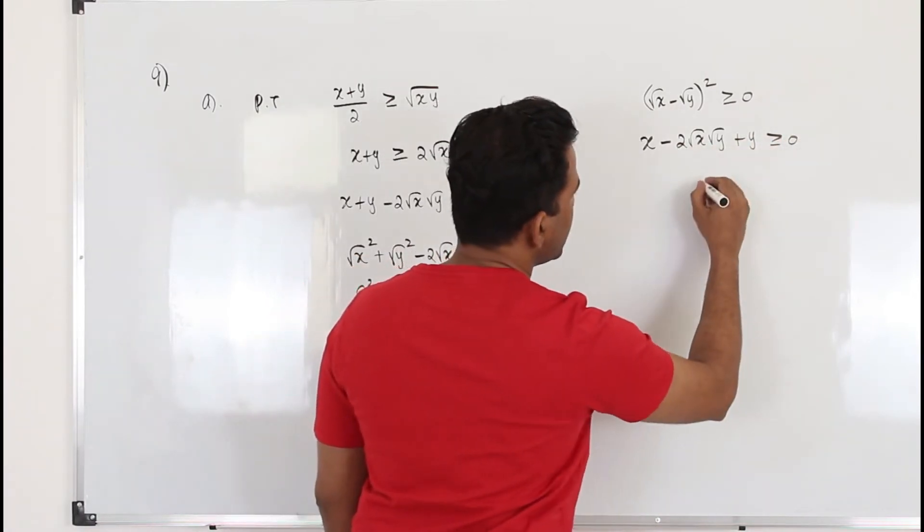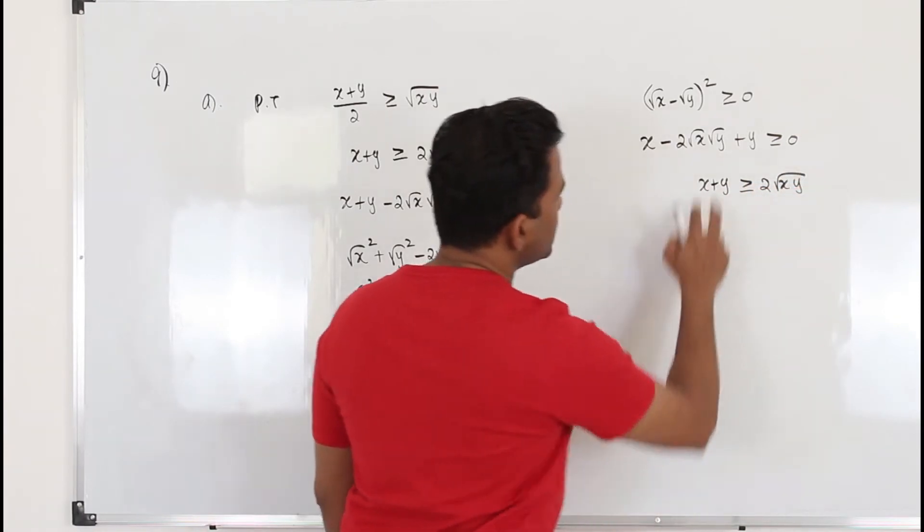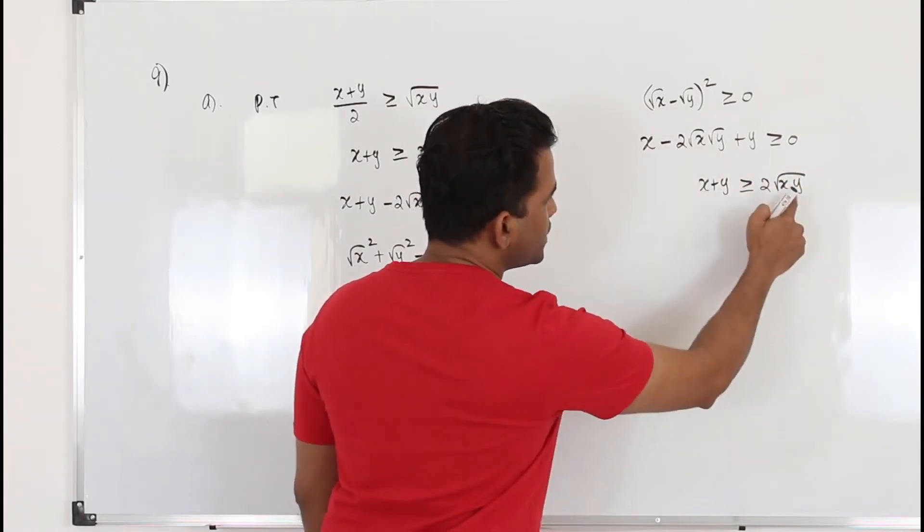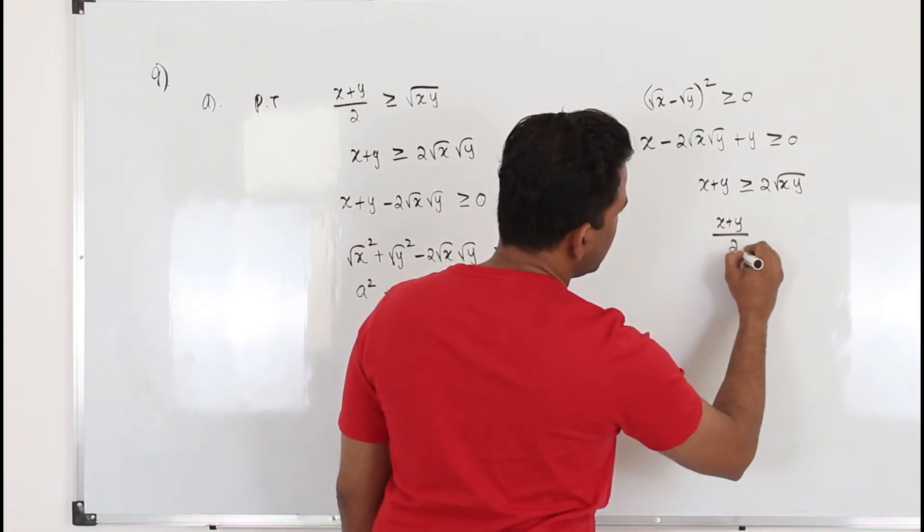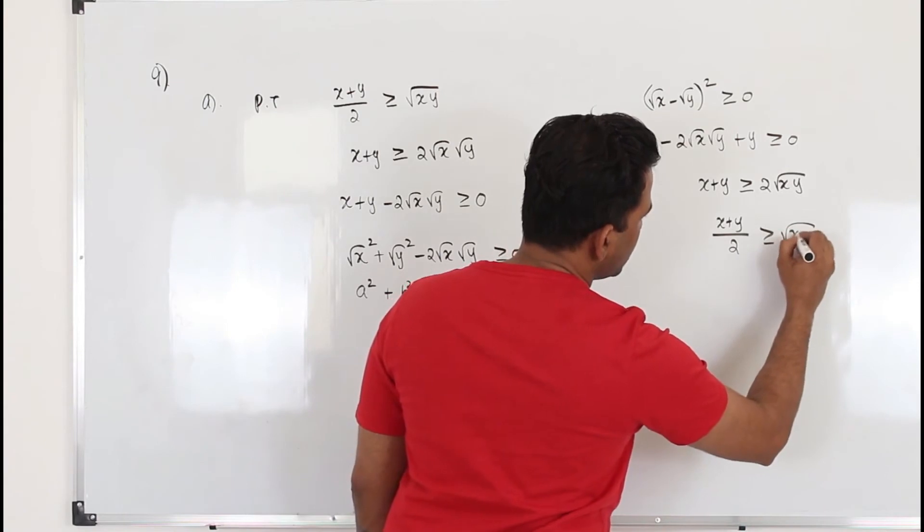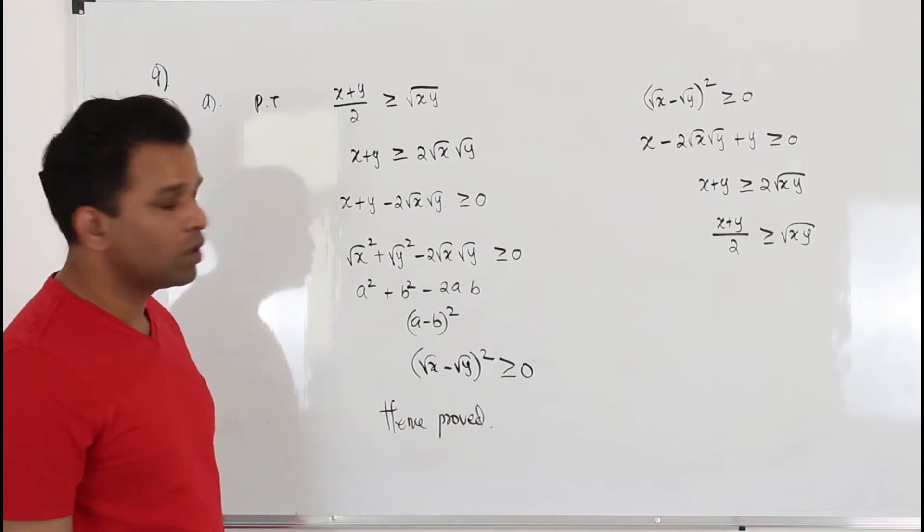Expand it. a square minus 2ab plus b square is greater than or equal to 0. Bring this term to the other side. x plus y is greater than or equal to 2 square root of xy. You can just multiply them, put it in a single square root, divide both sides. You can prove it already. This is what they want you to prove. Up to you, you can do both, any one of this.